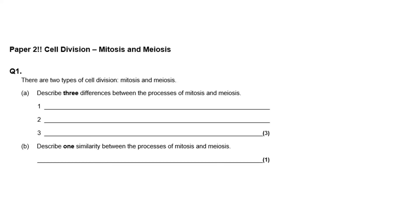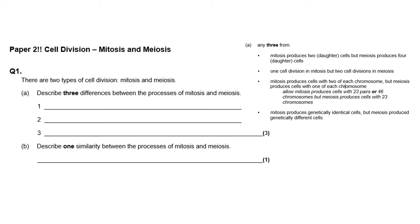Let's have a look at some examples. Here's a paper two question, and it's about cell division. You do meiosis in paper two, but mitosis is paper one — so it's a fundamental concept. Here it talks about the three differences between mitosis and meiosis. So if you hadn't gone over mitosis for your paper two revision, you might not get these marks. It's really important you look at cell division and mitosis even for paper two.